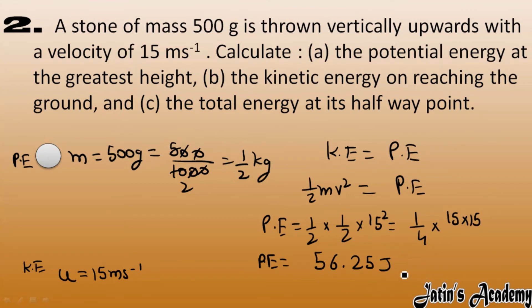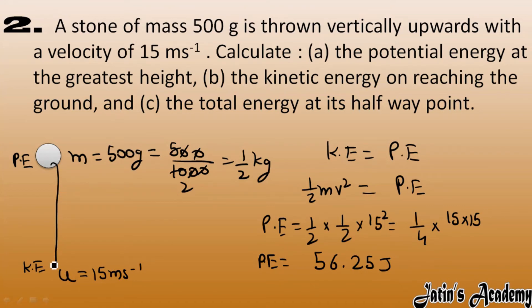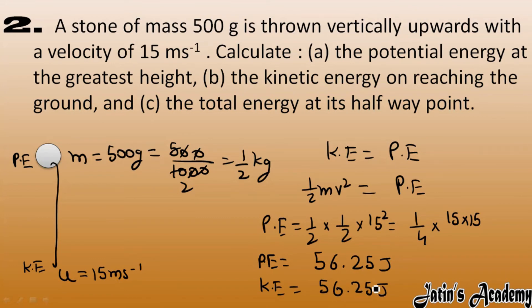Next, we have kinetic energy on reaching the ground. When the ball moves back in the downward direction, the whole potential energy is converted back into kinetic energy. At the lowest point, just before touching the ground, the complete potential energy is converted into kinetic energy. So kinetic energy at the lowest point, by conservation of energy, is also 56.25 joules.